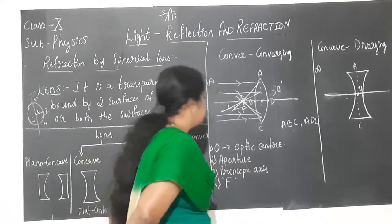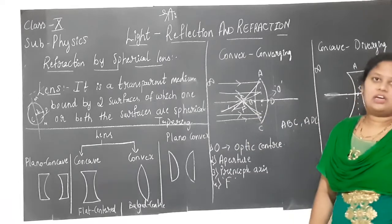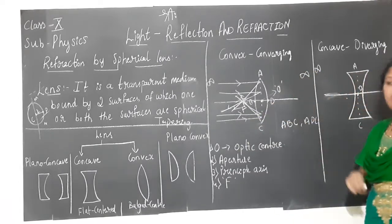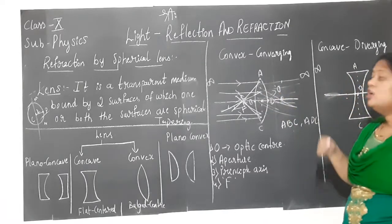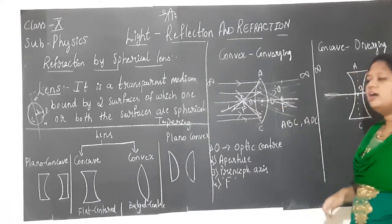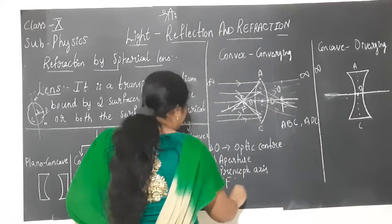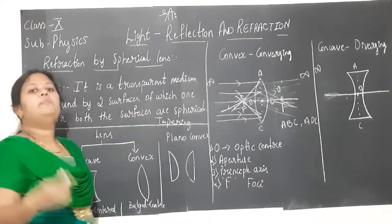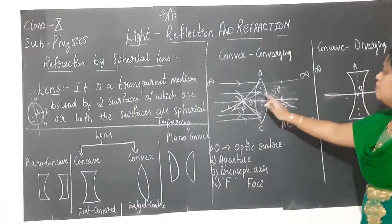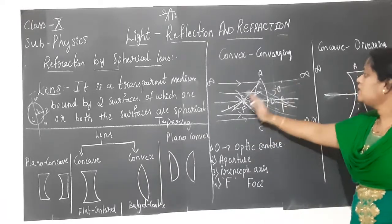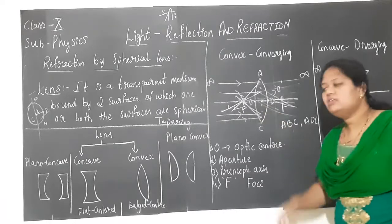If you mark the principal focus — since refraction can take place on both surfaces of the lens — if you keep the source of light towards one side, the rays will converge at a principal focus on that side. If you keep it towards the other side, the rays will converge at a principal focus on the other side. So any lens will have two principal foci. 'Focus' is singular; 'foci' is the plural form. Both lenses have a principal focus on both sides because two surfaces are available for refraction and it is a transparent medium.